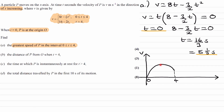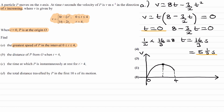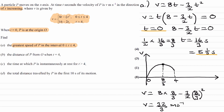We can see from our graph the greatest speed would be at the turning point. Since this is a quadratic, it's a symmetrical shape, so the turning point is halfway between t equals 0 and t equals 16/3. Half of 16/3 is 8/3. So the t value at the turning point is 8/3. We then work out v by substituting t equals 8/3 into the equation: v equals 8 times 8/3 minus 3/2 times (8/3) squared, which gives 32/3 meters per second. That is the final answer to part A.